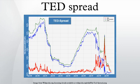Initially, the TED spread was the difference between the interest rates for three-month U.S. Treasuries contracts and the three-month euro-dollars contract as represented by the London Interbank Offered Rate. However, since the Chicago Mercantile Exchange dropped T-Bill futures after the 1987 crash, the TED spread is now calculated as the difference between the three-month LIBOR and the three-month T-Bill interest rate.